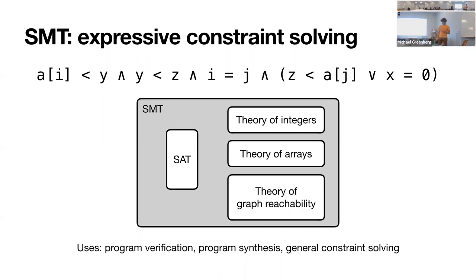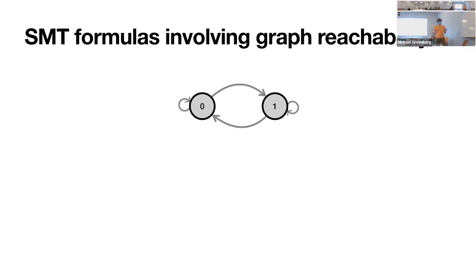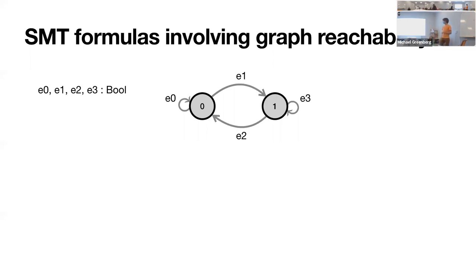Let's think about what a theory of graph reachability might look like. Essentially what you ultimately want to be able to do is write SMT formulas that involve questions of graph reachability. Here's a graph with two nodes and four potential edges. We're going to label each of these edges with a Boolean value — if the Boolean value is true, that edge is included in the graph; if false, it's left out.